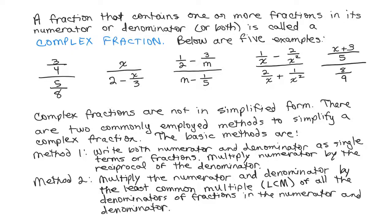If you look at the fourth example, 1 over X minus 2 over X squared in the numerator, there are two fractions in that numerator separated by a subtraction sign, so that's not a single fraction. And in method 2,